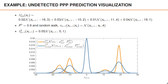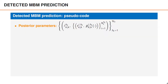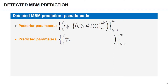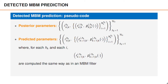That was the prediction of the Poisson point process part of the PMBM density. Next we have the MBM part for the detected objects. In a PMBM filter, the posterior MBM parameters are, for each multi-Bernoulli, the log weights and the set of Bernoulli parameters. In the predicted MBM, we have the same number of global hypotheses and the same hypothesis probabilities — the same number of multi-Bernoullis and the same log weights. Then for each multi-Bernoulli, we have the predicted Bernoulli parameters, which for each multi-Bernoulli h and each Bernoulli i are computed the same way as in an MBM filter.